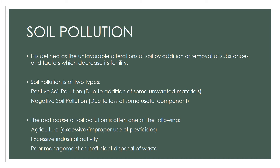Positive soil pollution occurs due to the addition of unwanted materials into the soil — for example, pesticides, fertilizers, or any chemical addition. It can also be industrial waste or mine dust. When these chemicals are added to the soil, it becomes polluted — this is called positive soil pollution.